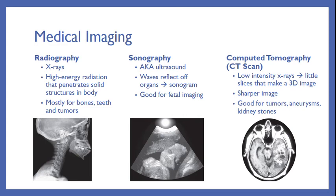Everybody's seen pictures of little babies with their ultrasounds — you're trying to make the shape out and it looks kinda human, but you're not sure. They're not the best image. For a really clear image of something other than bones, a great place to go is a CT scan. These are low-intensity x-rays where we take pictures in very small slices, and by combining these we can make a 3D image. They produce a much sharper image than ultrasounds, so they're good for tumors, aneurysms, kidney stones — anything in the soft tissue that we need to locate in a 3D position.